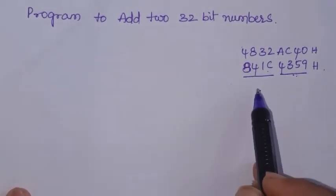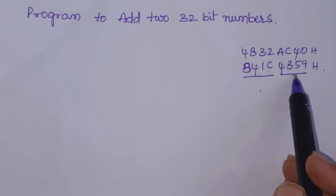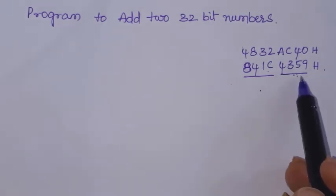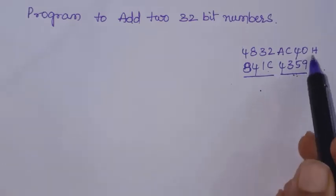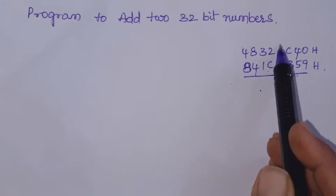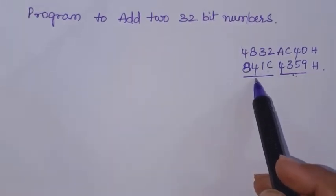In 8086, we can add 16-bit data at a time. We have instructions because the internal registers are of only 16-bit. 16-bit numbers can be added with the help of ADD instructions. So first, the low order 16-bits are to be added. Then, along with the carry, the high order 16-bits are added.